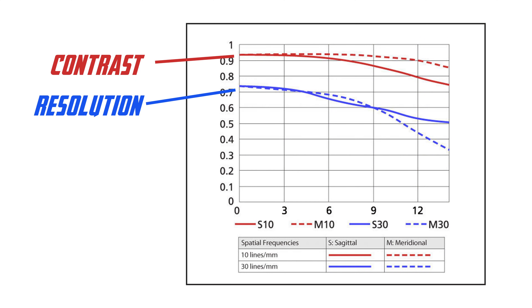The second line is the resolving power of a lens. If it's above about 0.8 or 80%, it's considered excellent. If it's below 0.6 or 60%, it's considered not that great.